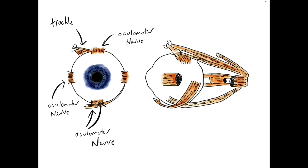The trochlear nerve innervates the superior oblique muscle. Again, it comes from the midbrain, travels through the cavernous sinus, and through the superior orbital fissure to innervate the superior oblique muscle.